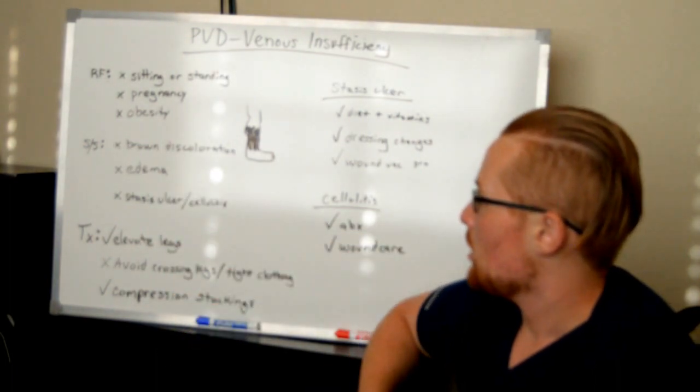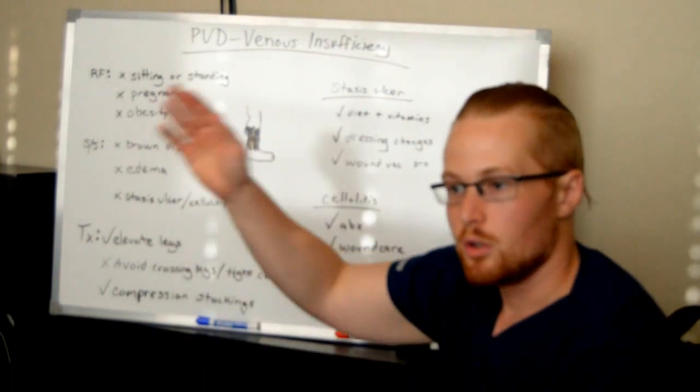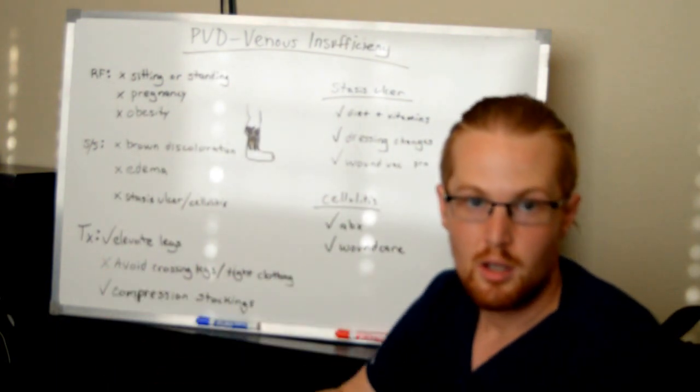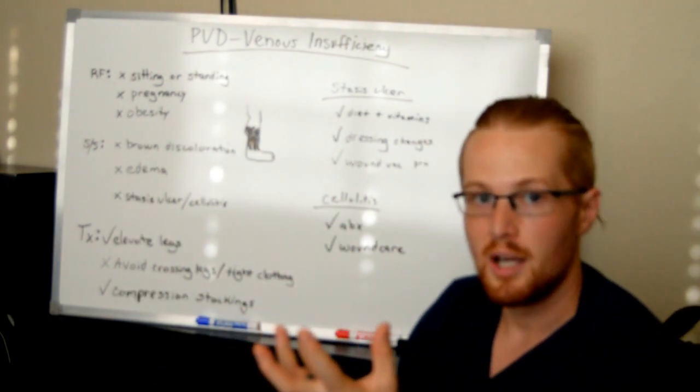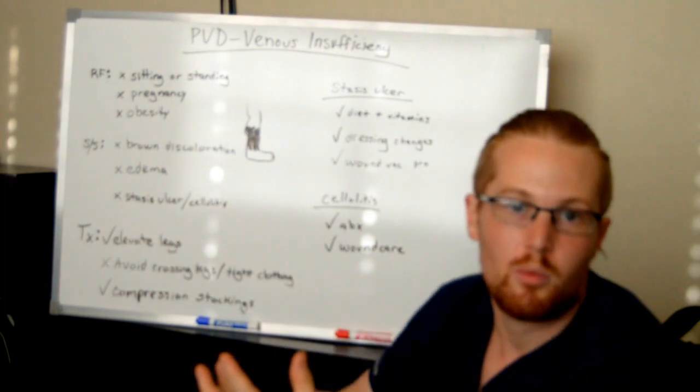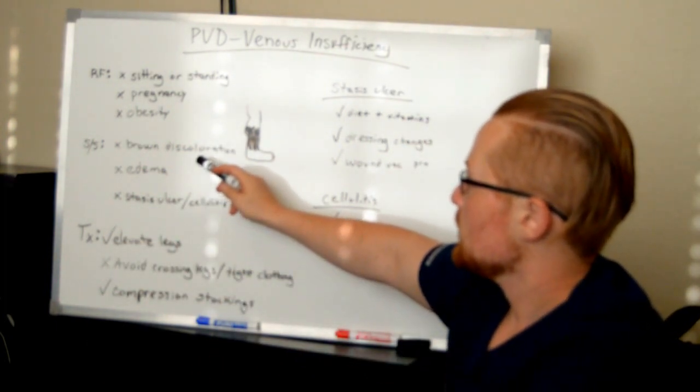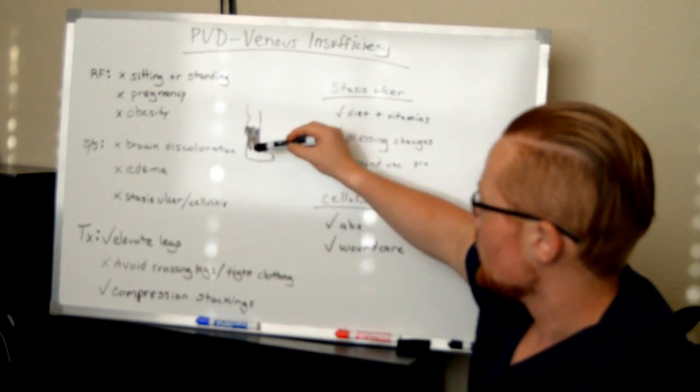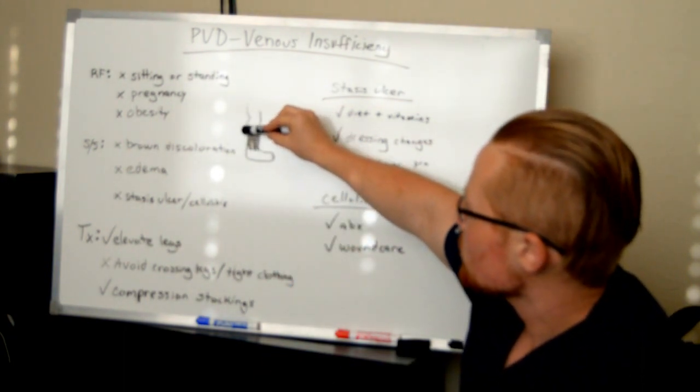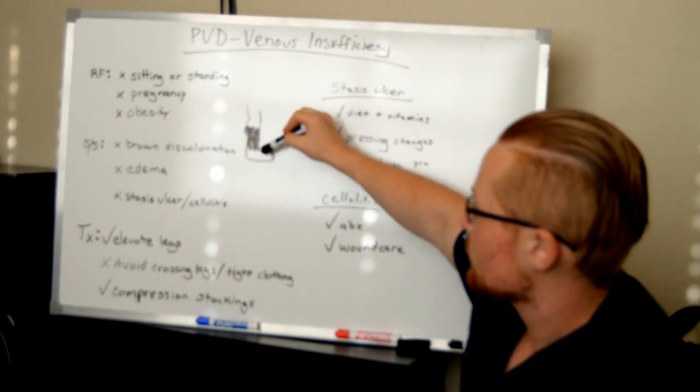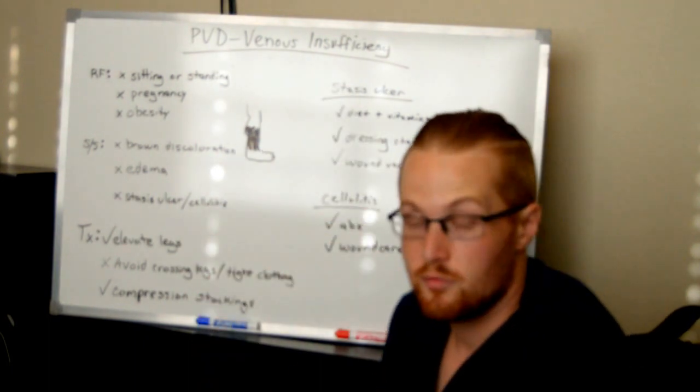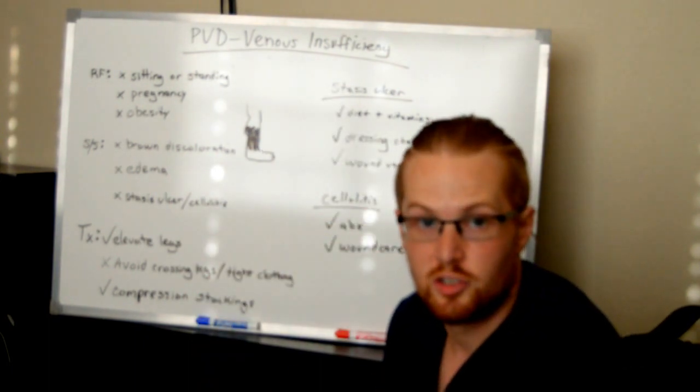Also what happens is there's not very good blood flow going through the legs now because when you have that pooled blood, fresh blood is having a hard time getting its way in. And so what happens is you can lead to a brown discoloration and you'll see it go from the ankle with brown to purplish discoloration going up the leg. The further up it goes, that's further up that you have the venous insufficiency.